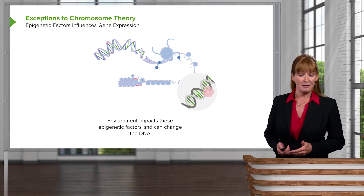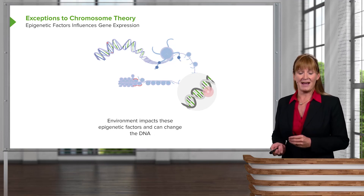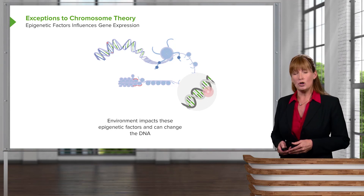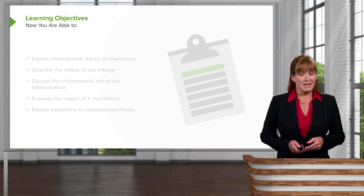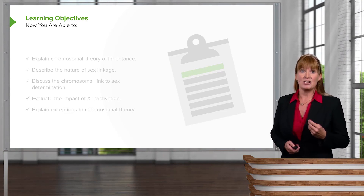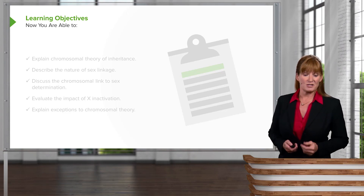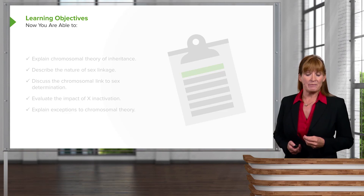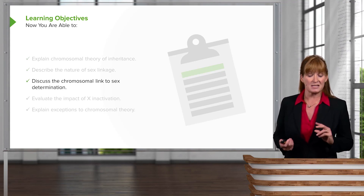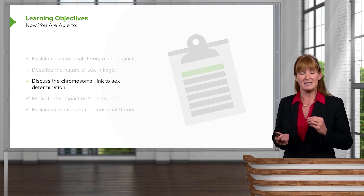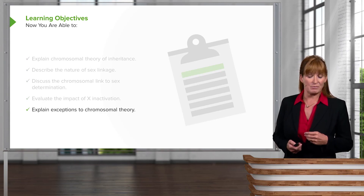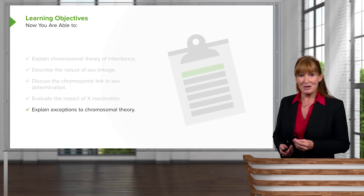The environment impacts these epigenetic factors and can change the DNA — and we're learning that these changes to DNA could be heritable. So in this lecture, we've explored chromosome theory, sex linkage, and epigenetics — factors that are not in the chromosomes themselves. By now, you should be able to explain the chromosomal theory of inheritance, describe the nature of sex linkage, discuss how chromosomes are involved in determining sex, evaluate the impact of X-inactivation, and explain exceptions to chromosomal theory. Thanks so much for listening.